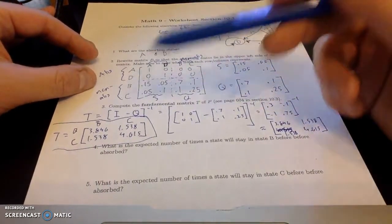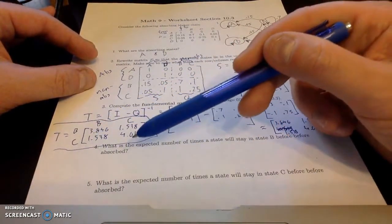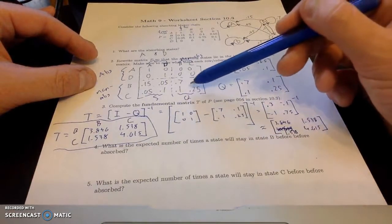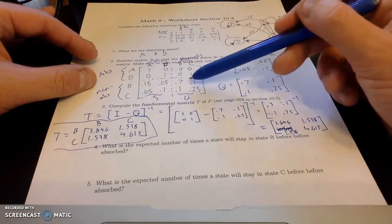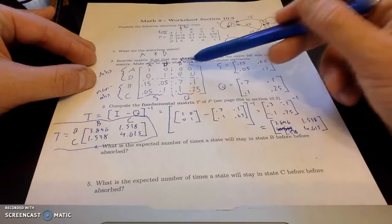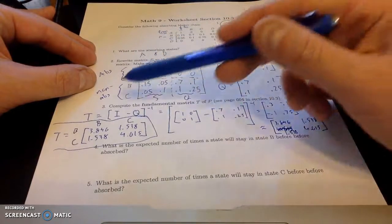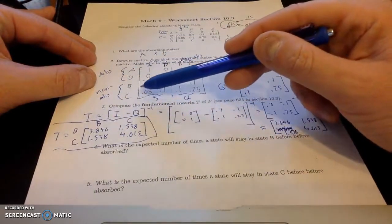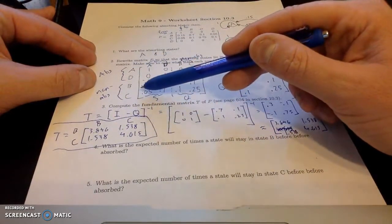We're going to use this fundamental matrix. And again, labeling these I think is the utmost importance. Since we started with Q, we manipulated this bottom matrix. Both of the columns correspond with B and C, non-absorbing states. And both rows also correspond with non-absorbing states, B and C.